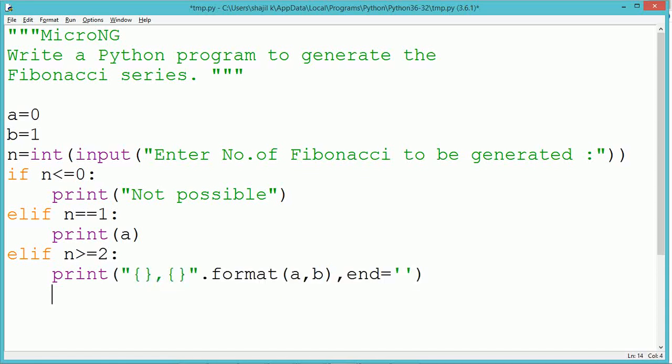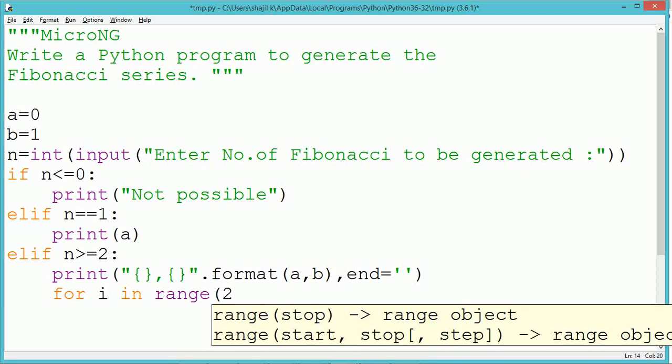In the first print statement, we have used two placeholders, two blocks of curly braces. The first block of curly braces will be replaced by the value of a and the second block of curly braces will get replaced by the value of b.